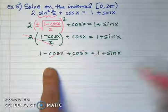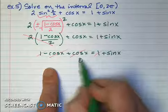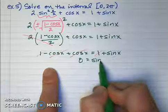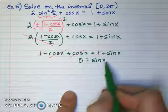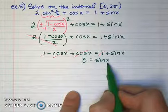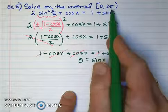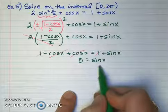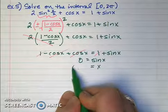So I'm left with 0 = sin x, and the only places where sin x = 0 within [0, 2π] are x = 0 and x = π.